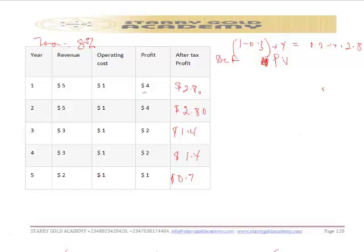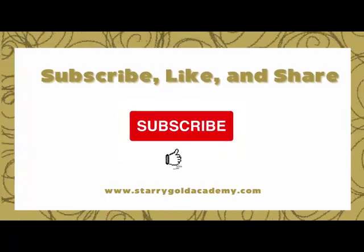Before tax it was $4, but after tax it becomes $2.8. If one fails to consider tax, it might make a project appear acceptable when it may not be, since in any community there are statutory obligations you must fulfill — among them is tax. You cannot avoid it, and to try to do so is essentially getting out of business. So whatever decision you want to make, you must always factor in tax.